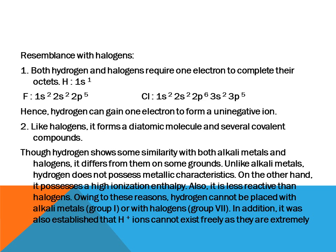Now, how does hydrogen resemble halogens? Number 1: both hydrogen and halogens require one electron to complete their octet. As hydrogen already has one electron, if it requires one more electron then it will give H⁻¹. The same is with group 17 elements — fluorine and chlorine — whose outermost shell shows they require only one electron in the p-subshell. Hence hydrogen can gain one electron to give a uninegative ion. Number 2: like halogens, it forms a diatomic molecule and several covalent compounds.